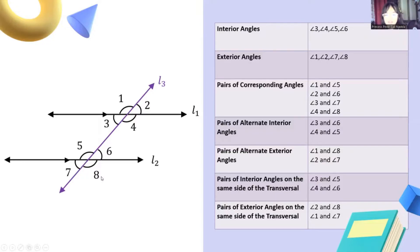The pairs of corresponding angles are angle 1 and 5, angle 2 and angle 6, angle 3 and angle 7, and angle 4 and angle 8. The pairs of alternate interior angles are angle 3 and angle 6, angle 4 and angle 5.